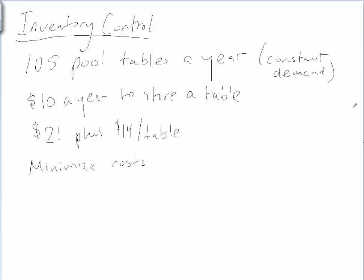So we have these 105 pool tables. Do we want to order them all at once and have them throughout the year? Do we want to order half of them now, half of them later? How are we going to do this? We want to have the goal in mind of minimizing costs.